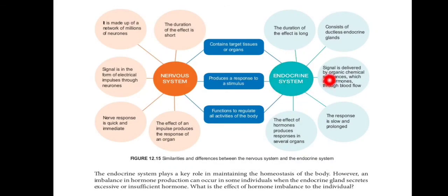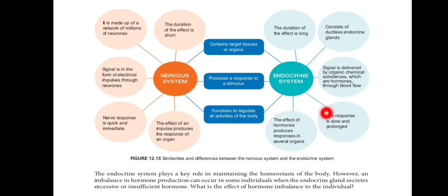The endocrine system plays a key role in maintaining the homeostasis of the body. However, an imbalance in hormone production can occur in some individuals when the endocrine gland secretes excessive or insufficient hormone. We will continue with the next subtopic in the next video. Thank you.